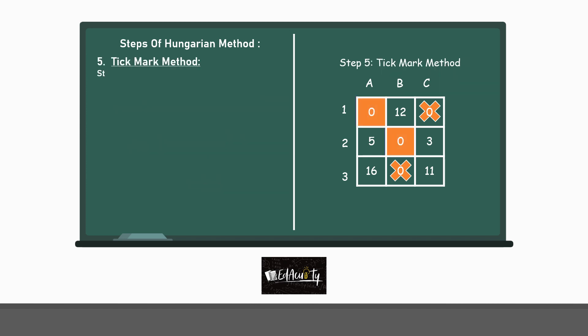Step 5 is the tick marking method. It has some sub-steps. The first step is step 5.1. Tick the rows which do not have any assignment. We will proceed by applying the steps in the matrix on the right-hand side. So, here observe that row 3 has no assignment. So, tick that row.